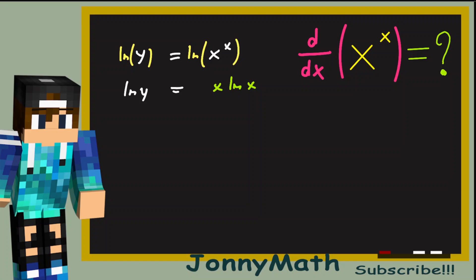This means we have to take the derivative on both sides, so d over dx of the natural log of y equals d over dx of x times the natural log of x.